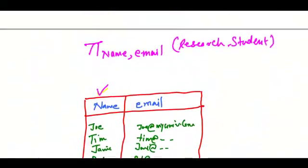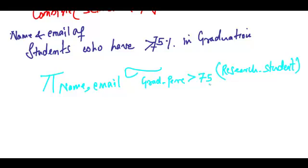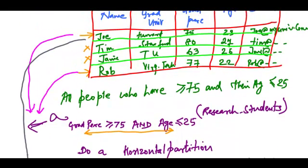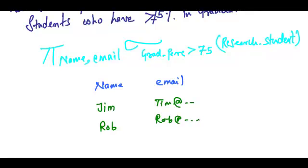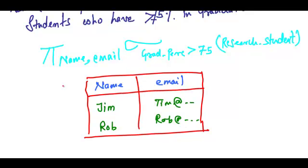And what would I get as a result? I would get name and email of those greater than 75. Tim and Rob. So my table would have values Tim, Rob, and their emails. So this is the relation that I get when I execute this relational algebra expression. This is the result.